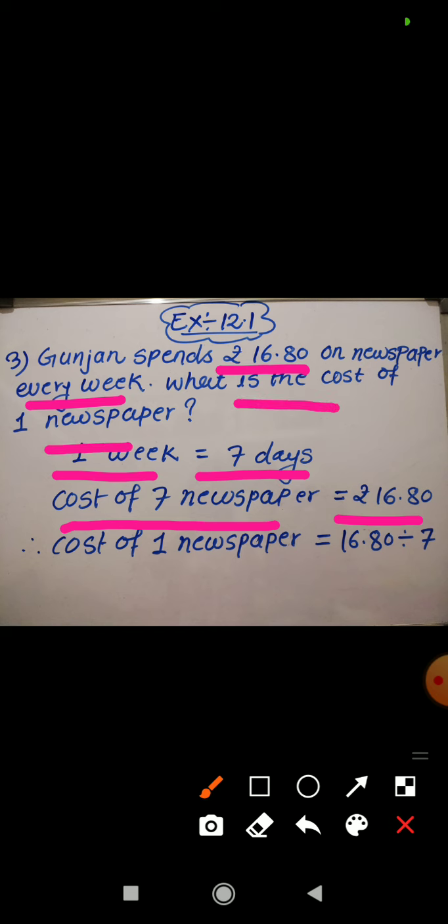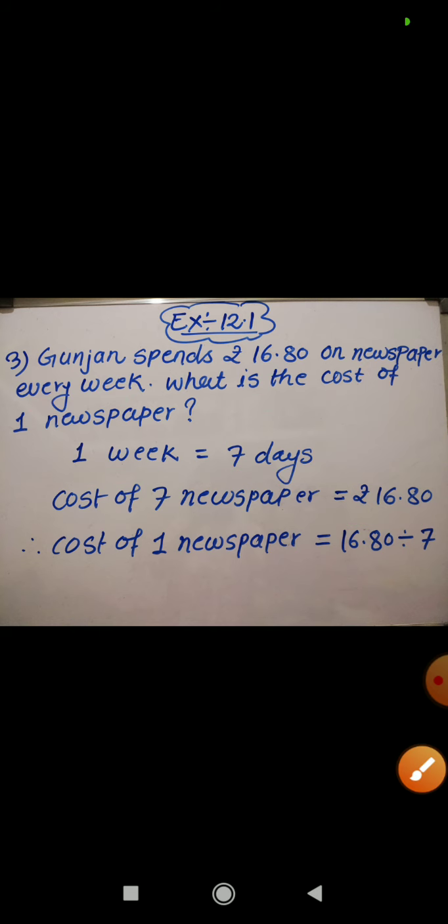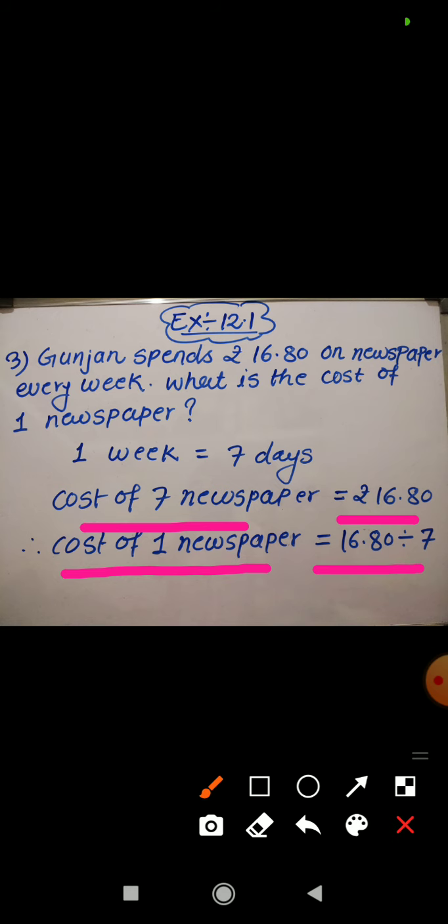So how will you find out the cost of one newspaper? Yes, you need to divide. Since the cost of seven newspapers is 16 rupees 80 paise, cost of one newspaper will be 16.80 divided by 7.